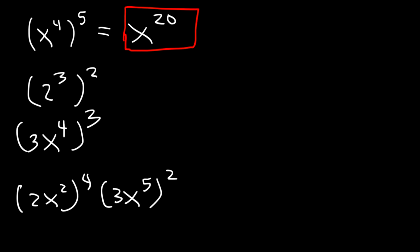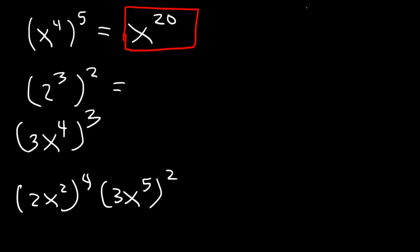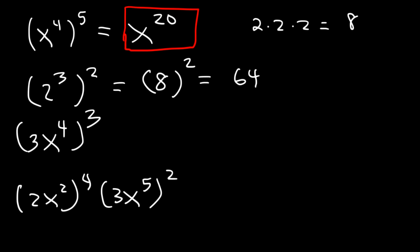Now for 2 to the third raised to the second power, we can multiply the exponents: 3 times 2 is 6, giving 2 to the sixth. But instead, let's first find 2 to the third: 2 times 2 times 2 is 8. So we have 8 squared, which is 8 times 8, that's 64. So 64 is the answer for the second one.